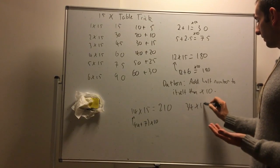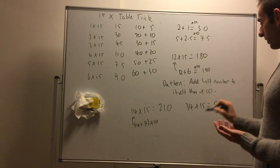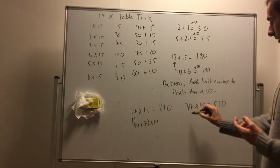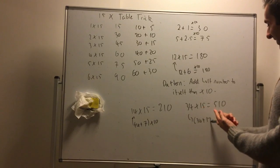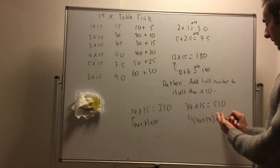34 times 15. What's that? 510. How'd I get that? 34. What's half of 34? 17. Then times it by 10.